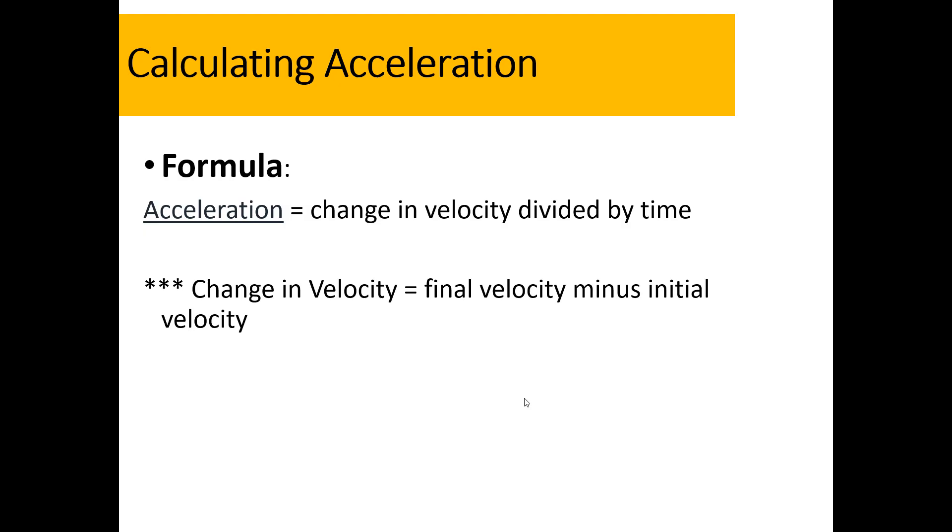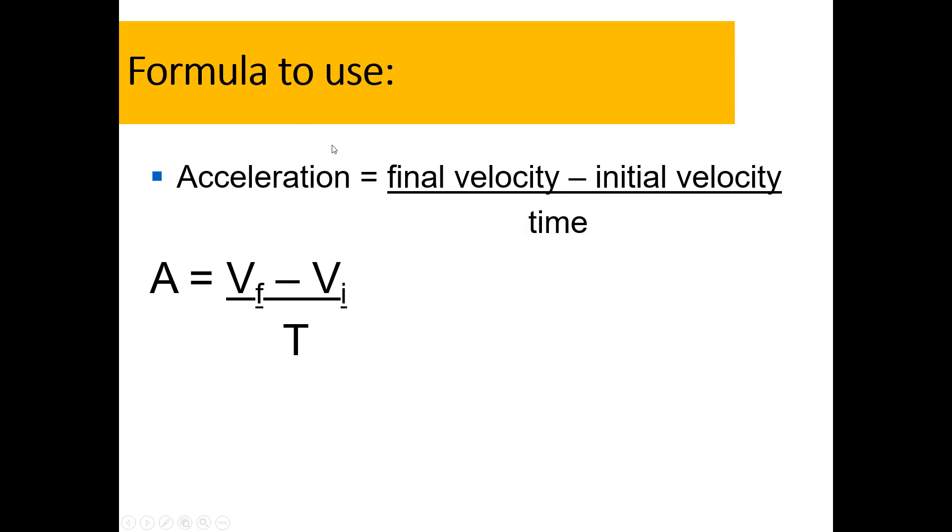We can calculate acceleration just like we were able to calculate speed and velocity. Acceleration has a formula. This formula is rather intimidating when you first see it, but it's really simple. You'll see when we start the word problems. Acceleration is a change in velocity divided by time. In order to calculate the change in velocity, we're going to take the final velocity, which is the speed of the object at the end of our word problem, and we're going to subtract the initial velocity from that. So initial means at the start or at the beginning.